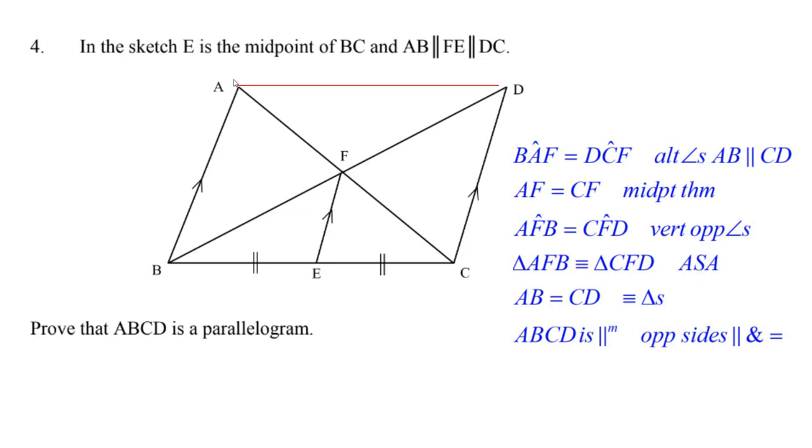Well, if they're congruent triangles, then AB must be equal to CD. And I think that's what we need to prove. If we've given that they're parallel, we know that the two sides are equal. If you have two opposite sides that are parallel and equal, it means that ABCD is a parallelogram.